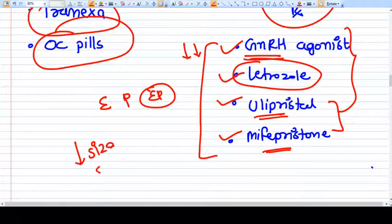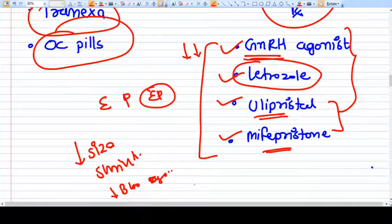All this drug can do what? They can decrease the size, they can shrink the size, they can decrease the blood supply of this myoma. But what they cannot do is they cannot completely remove myoma. These drugs can also help before surgical treatment as they can decrease the size and they can decrease the blood supply of the myoma so that you have less problem of bleeding while doing myomectomy.